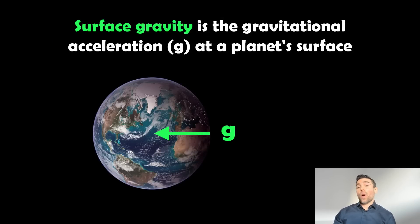So what is the surface gravity? Well, it's the gravitational acceleration at a planet's surface and we're going to use this variable g to denote the surface gravity as we go through this video.